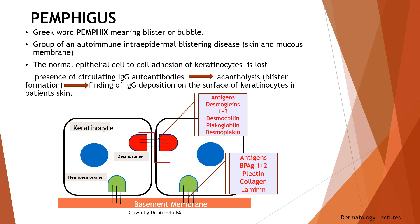Cadherin is a single transmembrane protein with a unique structure. Because of the loss of normal cell-to-cell adhesion of the keratinocytes, leading to acantholysis causing blister formation, followed by the finding of IgG deposition on the surface of keratinocytes in the patient's skin.